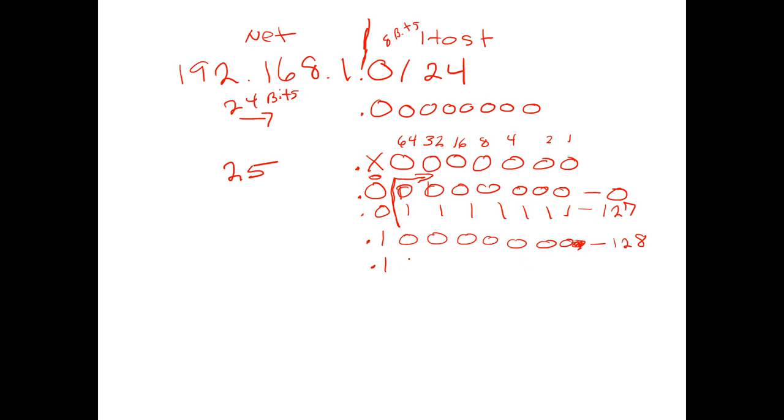And then this goes to 255. And so by taking this bit, this bit that we borrowed, going from 24 bits in the network side to 25 bits, we are using that then to decide whether we want the low half or the high half.